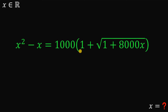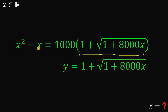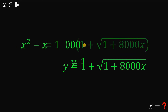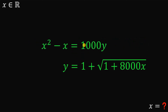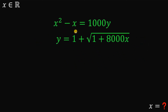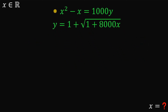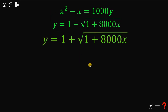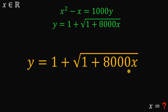One technique to answer this question is substitution. Let y equal the expression 1 plus the square root of 1 plus 8,000x. Our original equation then becomes x squared minus x equals 1,000 multiplied by y. We now have two equations consisting of x and y.